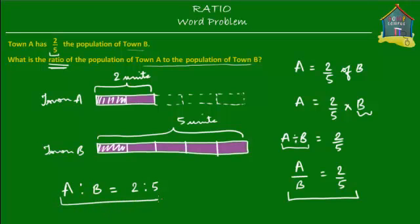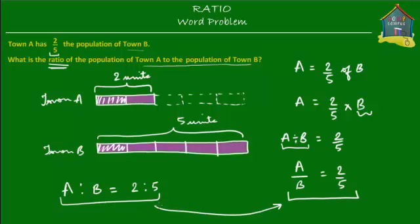Do you see a relation between the ratio A to B and the fraction A over B? It's just the numerator and the denominator written as the first and second terms of the ratio. So the fraction A over B, which is two over five, can be written as the ratio A to B, which equals 2 to 5. The numerator and denominator simply become the two terms of the ratio.